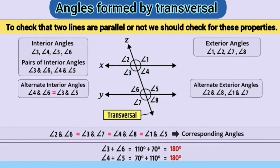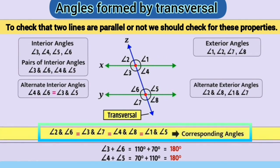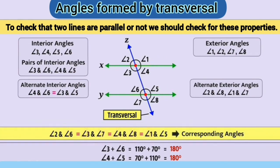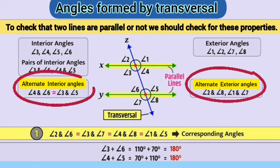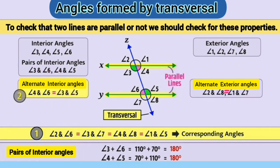If a transversal intersects two lines so that each pair of corresponding angles are congruent, then the lines are parallel. Similarly, if each pair of alternate interior angles are congruent, then the lines are parallel. If each pair of interior angles on the same side of the transversal are supplementary, then the lines are parallel.